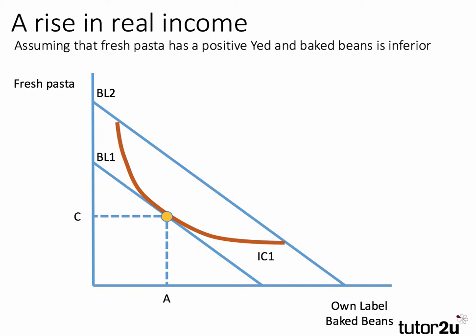When you're drawing normal and inferior goods, you have to draw the indifference curves in a particular way — it just takes some practice. Keep in mind that indifference curves can't intersect, so be careful when drawing them. I've drawn it so that IC2 is a higher indifference curve that can just be reached — the point of tangency between BL2 and IC2 is shown there.